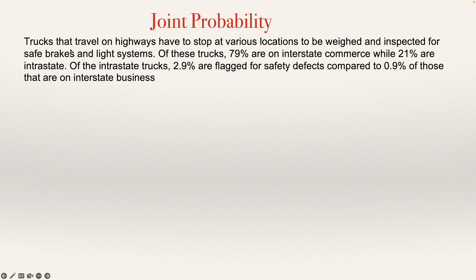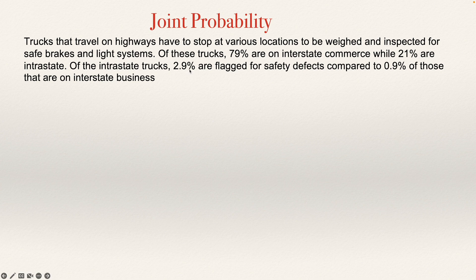The problem says: trucks that travel on highways have to stop at various locations to be weighed and inspected for safe brakes and light systems. Of these trucks, 79% are on interstate commerce, while 21% are on intrastate. Of the intrastate trucks, 2.9% are flagged for safety defects, compared to 0.9% of those that are on interstate business.